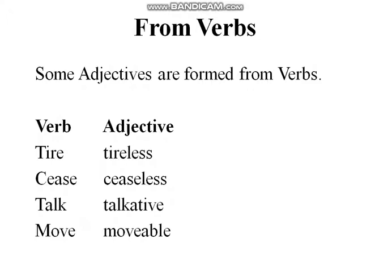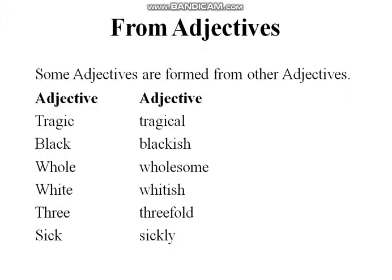In the same way, adjectives can also be formed from different verbs. Some adjectives are formed from verbs. Look at the verbs on the right side: 'tire' becomes 'tiresome', which is an adjective made from the verb 'tire'. 'Cease' becomes 'ceaseless', 'talk' becomes 'talkative', 'move' becomes 'movable'. These are adjectives made from verbs.